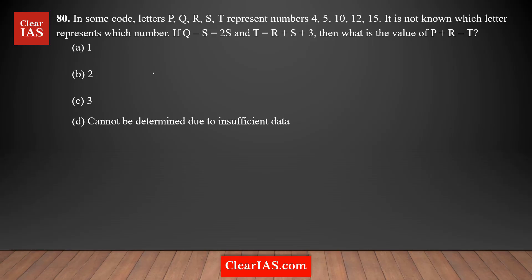This is another coding decoding type of question. In some code, there are letters P, Q, R, S, T representing the numbers 4, 5, 10, 12, 15. There are 5 letters and 5 numbers here, and it's clearly given that they are not in order. So we don't know which letter represents which number.